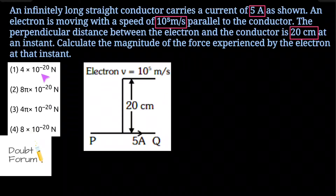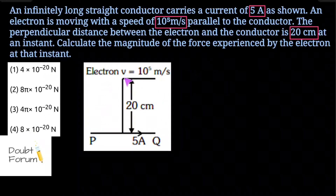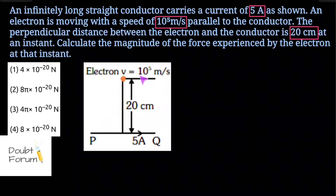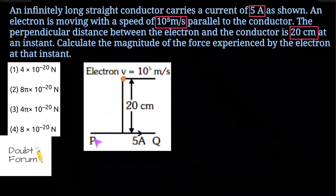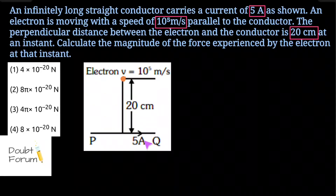Four options are given. Here in the figure there is an electron moving with a speed of 10 to the power of 5 meter per second parallel to the conductor. PQ is a straight, infinitely long conductor which carries a current equal to 5A. The perpendicular distance between the electron and the conductor is given as 20 cm. We are asked to find the force experienced by this electron.